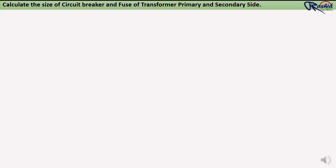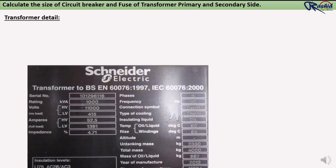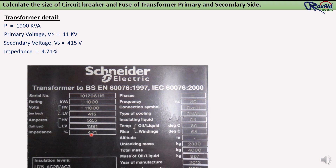Example 1: Calculate the size of circuit breaker and fuse for the transformer primary and secondary side. From the transformer nameplate, we can collect all information: transformer size is 1000 kVA, primary rating is 11 kV, secondary rating is 415 V, impedance is 4.71%, and transformer connection is delta-star type.